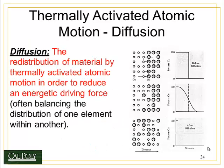So what is diffusion? It's the redistribution of material by thermally activated atomic motion in order to reduce an energetic driving force. Basically, we are moving around material by heating up the atoms, and the atoms move in such a way that they reduce an energetic driving force — some defect or something wrong with the system. Oftentimes, this driving force that gets reduced is the distribution of one element within another.